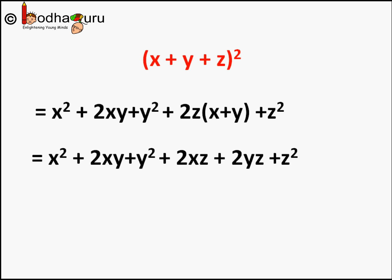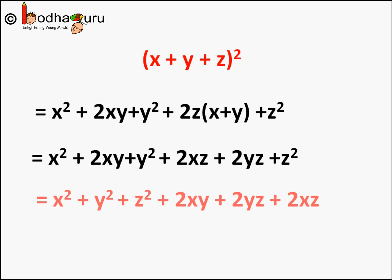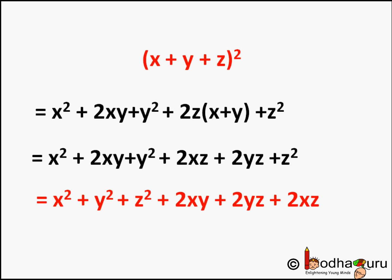Now we arrange them in descending order of their degree. So x plus y plus z whole square comes out to be x square plus y square plus z square plus 2xy plus 2yz plus 2xz. This is Identity 5.